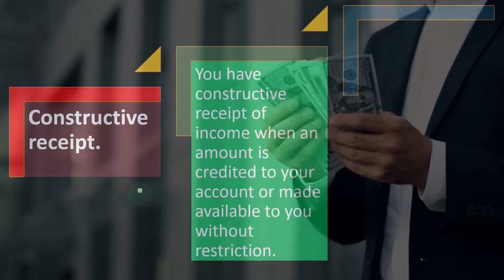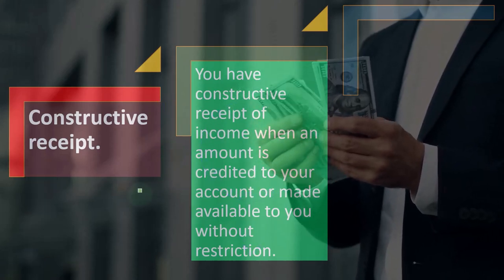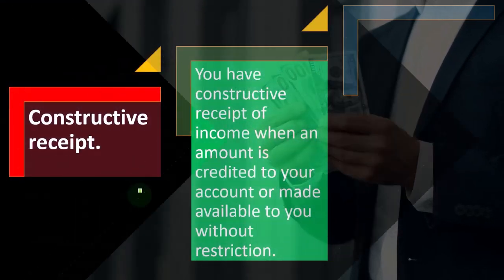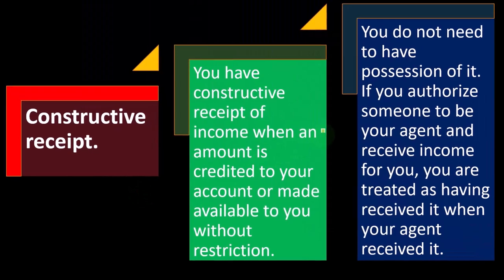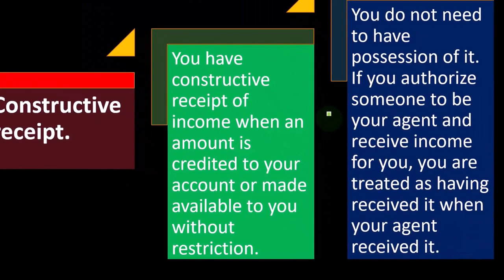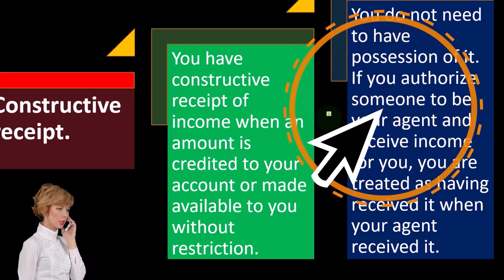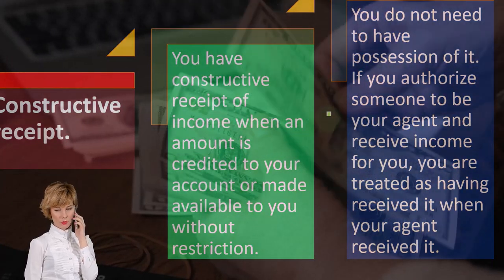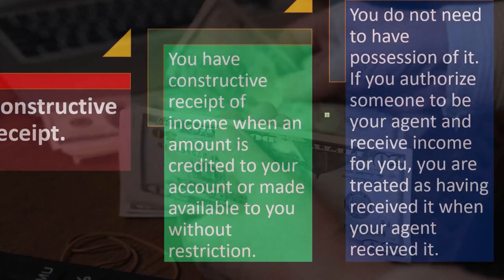Constructive receipt. You have constructive receipt of income when an amount is credited to your account or made available to you without restriction. You do not need to have possession of it. If you authorize someone to be your agent and receive income for you, you are treated as having received it when your agent received it.